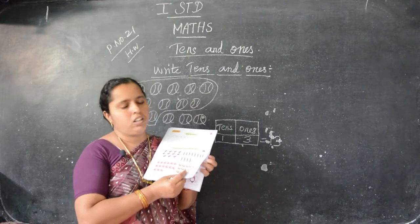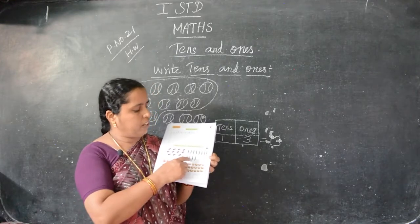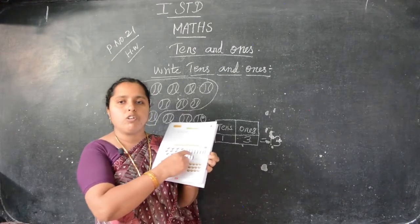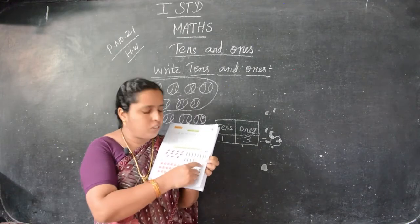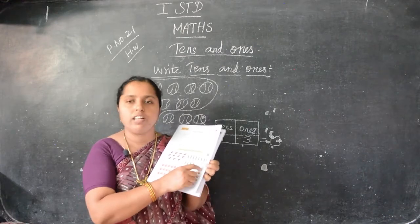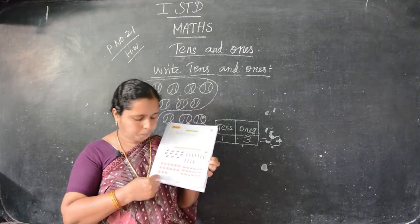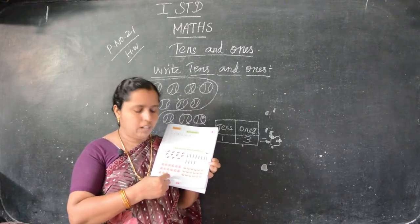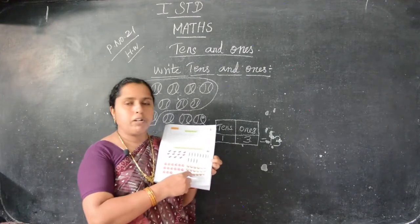Have you understood this one children? You have to do yourself — this is homework. This is homework for you. Ladies finger and onion and potato are there. First you have to group 10 — you have to draw a circle to group 10. The remaining is in 1s place and the group of 10 is 1 in 10s place — that is the number.